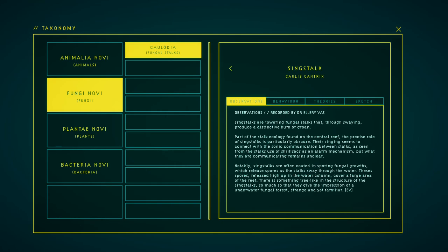Singing stalks are towering fungal stalks that, through swaying, produce a distinctive hue or groan. Part of the stalk ecology found on the central reef, the precise role of singing stalks is particularly obscure. They seemingly connect with the sonic communication between stalks, as seen from the stalks' use of frill sacks as an alarm mechanism, but what they are communicating remains unclear. Notably, singing stalks are often coated in spore-producing fungal nodules which release spores as the stalks wave through the water. They see spores released high up in the water column for a large area of the reef. There is something tree-like in the structure of the singing stalks, so much so that they give the impression of an underwater fungal forest. Strange and yet familiar.